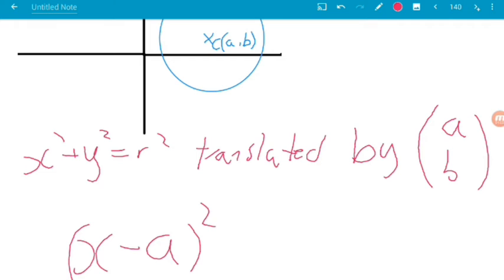So, that would translate our function A places, and then to translate it B places up, we would need to have y minus B squared, like that, and then that stuff is still equal to r squared.